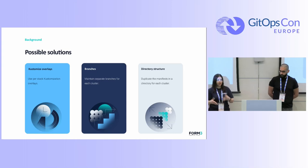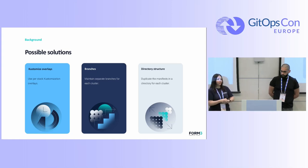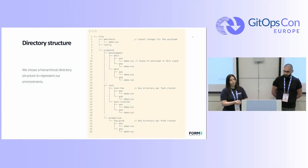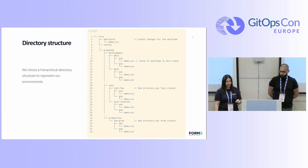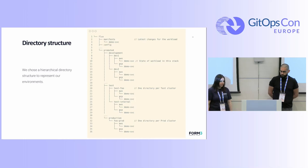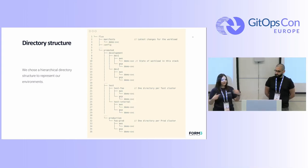Manifests would give us an immutable artifact that we could promote across environments. We didn't consider templating because we wanted to keep a low barrier for adoption — we wanted to unblock the teams and then iterate. The manifests folder is the source of truth, and changes to it will trigger the promotion. Changes here could be done either by PR or using Flux's image update automation, and each cluster has its own directory from which it reconciles.